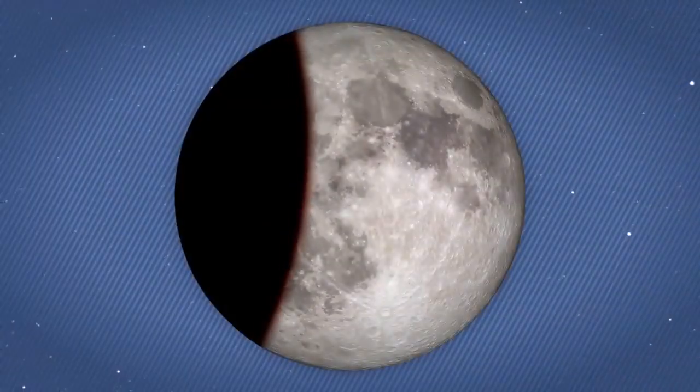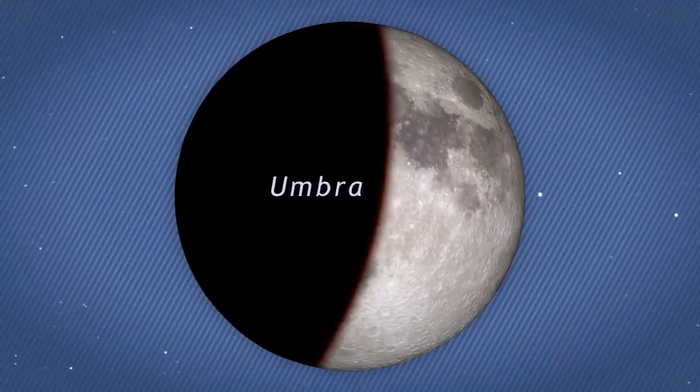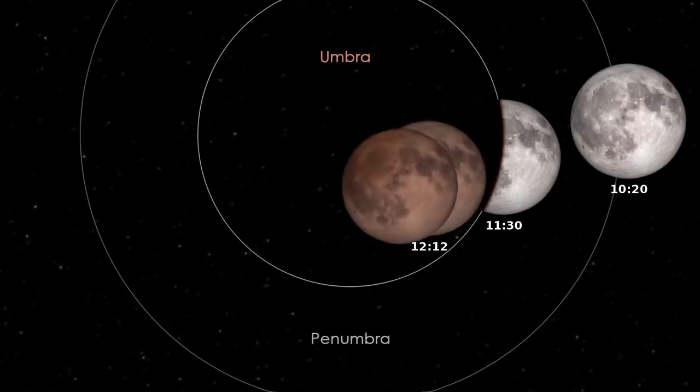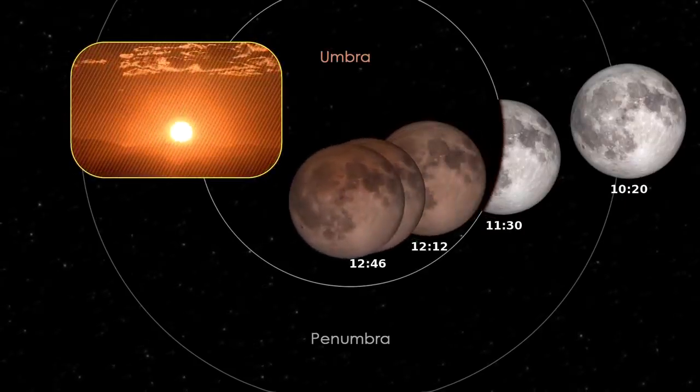As the moon passes into the central part of the Earth's shadow, called the umbra, it darkens dramatically. Once it's entirely within the umbra, the moon appears a dim red due to sunlight scattered through the Earth's atmosphere.